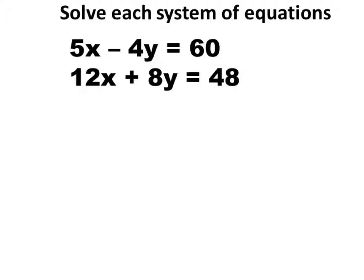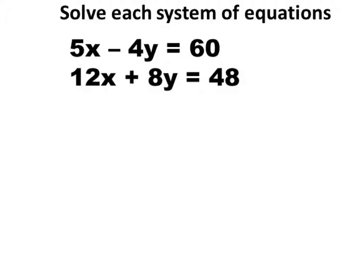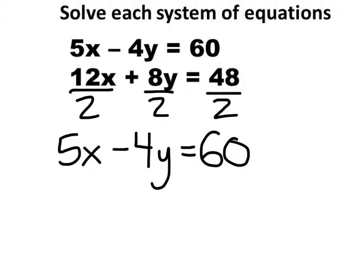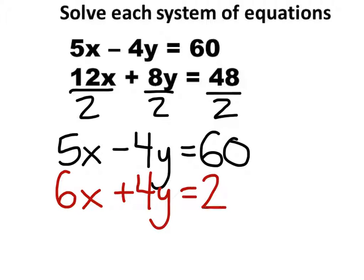So, what we're going to do is take this entire equation and make that an 8Y into a 4Y. How do I make an 8Y a 4Y? Divide by 2 — you're going to divide everything by 2. Another way to show this is that you just divide by 2 everywhere. So it's 6X plus 4Y. So now what you have — let's write that first one — 5X minus 4Y equals 60. And the second equation now is 6X plus 4Y equals 24.